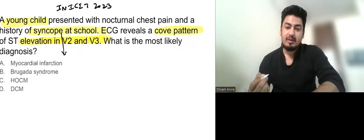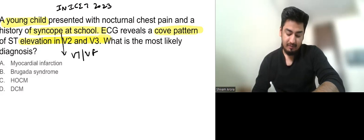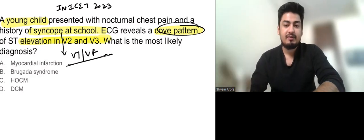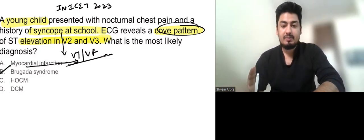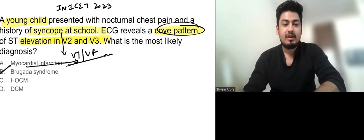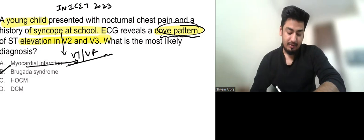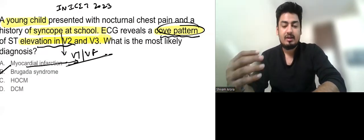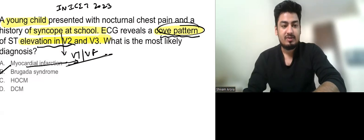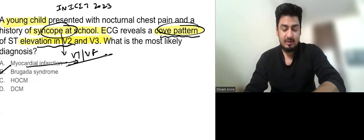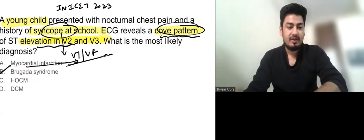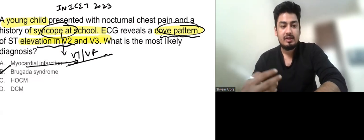So syncope in a young child probably it is VT or VF at that time. Also ECG is showing a cove pattern of ST elevation in V2 and V3 which is in favor of Brugada syndrome. So this is not a myocardial infarction. Why? Because one thing the patient is a young child. MI is rare in young patients. Other than that ST elevations are cove pattern in V2 and V3 while in STEMI the ST elevations are convex upwards. Also there is a history of syncope at school which might be because of VT or VF. So Brugada syndrome in young patients. That is why it is Brugada syndrome.